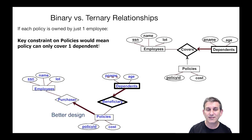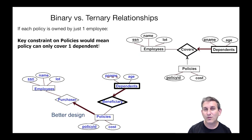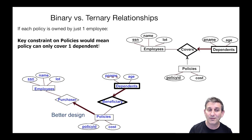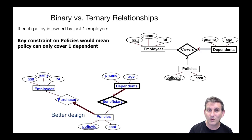Instead, we might want a schema that looks more like this — a design with two relationship sets. Dependents, still a weak entity, will be connected via a 'beneficiary' relationship set to a policy. So every dependent has exactly one policy that they're connected to. And that policy is in a relationship set with employees called 'purchaser.' Every employee can purchase policies; every policy has exactly one employee that purchases it. So now a dependent is a beneficiary of a policy, there may be many dependents on that policy, an employee can purchase many policies, and each dependent is on only one policy, while policies belong to exactly one employee.